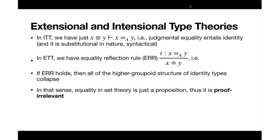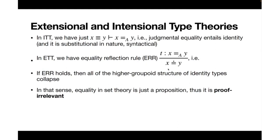In intentional type theory we have the rule that if X and Y are judgmentally equal, then it entails the identity type between them — so we go from judgmental equality to the identity type. In extensional type theory there is the contrary rule: if there is a term of the identity type proving X = Y, then they are judgmentally equal. So in extensional type theory we go from identity type to judgmental equality.